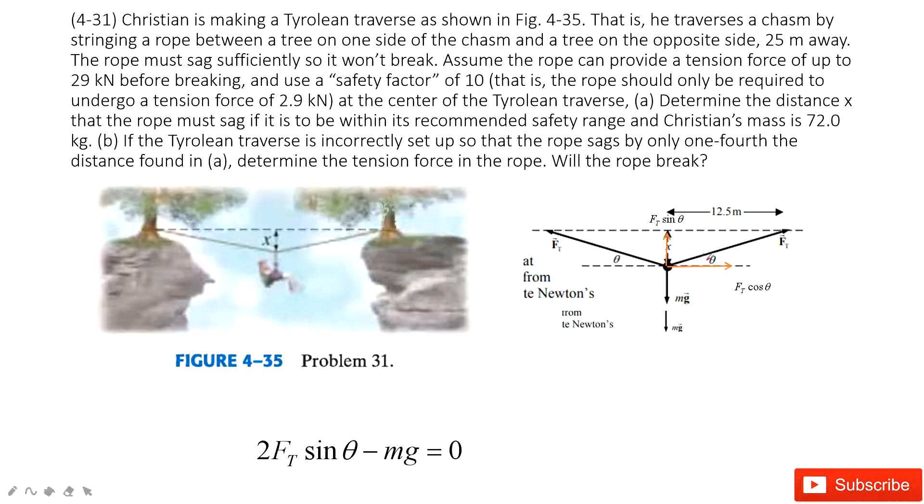And then we need to figure out this angle theta. We can look at this triangle. This one is theta, and this one is also theta. So x divided by 12.5 equals tangent theta.